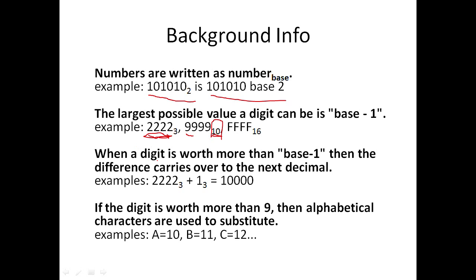If a digit is worth more than base minus 1, then you have to carry that value over to the next digit. Like in base 10, where 9 plus 1 carries over to give 10. Same thing in base 3. If you add 1 to 2222, that would be 2223, but 3 is not allowed. So you carry over to get 2230, and keep carrying. So 22222 plus 1 equals 100000.